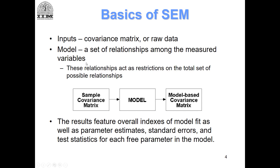AMOS is software that works on the covariance matrix. This is given as an input to the software. If you give raw data to the software, the software will actually compute the covariance matrix at the back end. And then you also give a model.